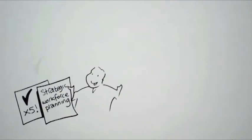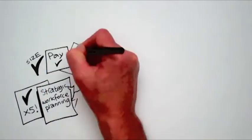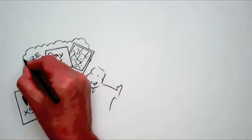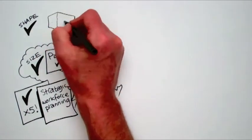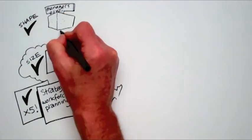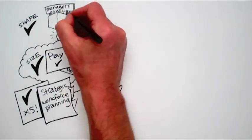Firstly, right size. Your pay might be right, but do you have too many people? Second, right shape. Is your organization top heavy? In other words, are there too many managers and not enough doers?